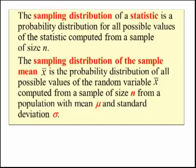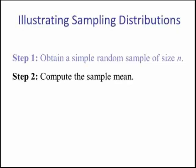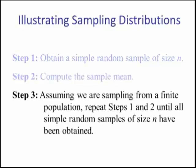This seems like a lot to take in, so we'll look at some examples. To illustrate a sampling distribution, we go through three steps. Step one: obtain a simple random sample of size n. Step two: compute the sample mean for that one sample. Step three: assuming we are sampling from a finite population, keep repeating steps one and two until all simple random samples of size n have been obtained.